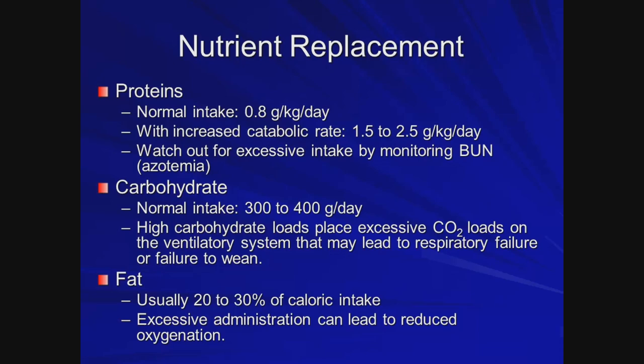Problems with excessive protein intake include an increase in urea in the blood — azotemia — which was one of the big problems with the Atkins diet due to its high protein content potentially leading to metabolic acidosis and renal failure. With carbohydrates, too large a load can cause an inability to wean patients from mechanical ventilation in the face of chronic CO2 retention. Excess fats can also lead to problems by reducing oxygen transfer.